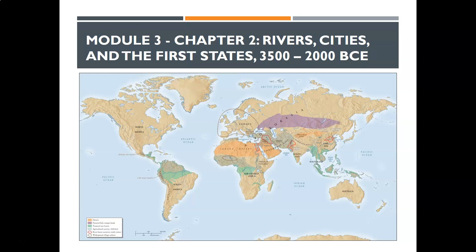In this module, what we're starting to look at, as you can see in the title, is rivers, cities, and first states around the globe. We're going to look at four major civilizations in order of when they appeared: Mesopotamia, ancient Egypt, the Indus River Valley civilizations, and civilizations in East Asia, which are in today's modern China.